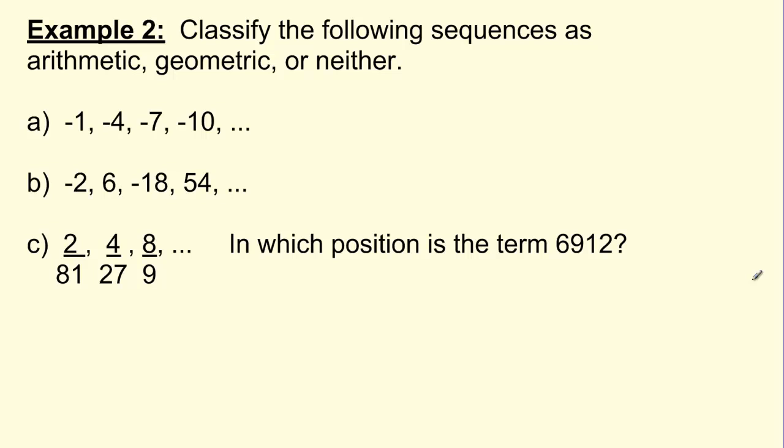Here's our last example we're going to see in this lesson. Classify the following sequences as either arithmetic, geometric, or neither. So I guess what we're looking for is does it have a common difference, a common ratio, or neither a common difference or common ratio? Look at A. Okay, negative 1, negative 4, negative 7, negative 10. Can you immediately see if there's a common difference or a common ratio? Well, hopefully you notice that this does indeed have a common difference. So I have an a value here of negative 1 and I have a common difference, D, where each term in the sequence is subtracted by 3 to get to the next.